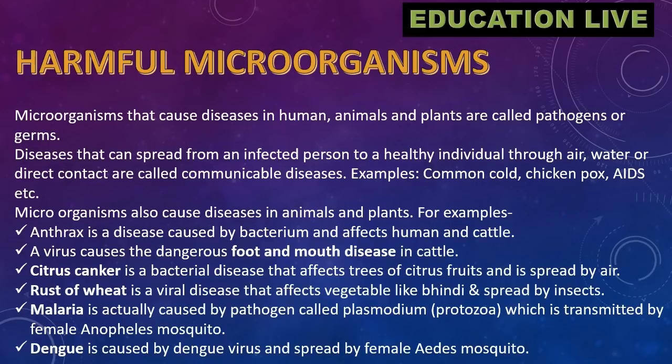Anthrax is a disease caused by a bacterium and affects humans and cattle. A virus causes the dangerous foot-and-mouth disease in cattle. Citrus canker is a bacterial disease that affects trees of citrus fruits and is spread by air.